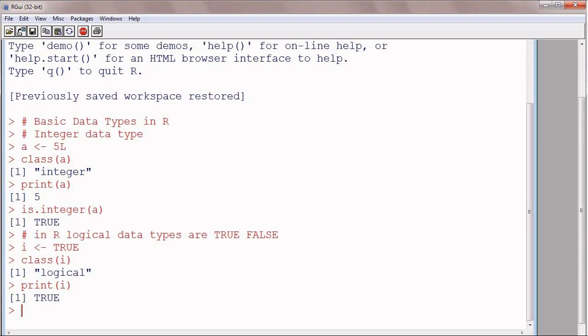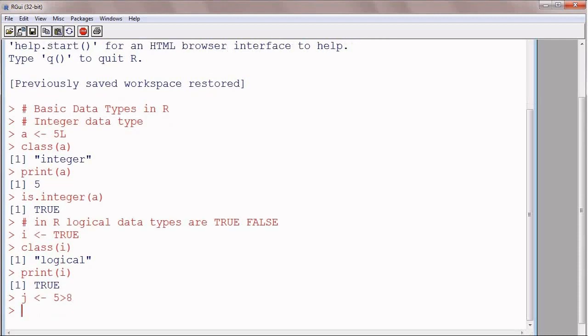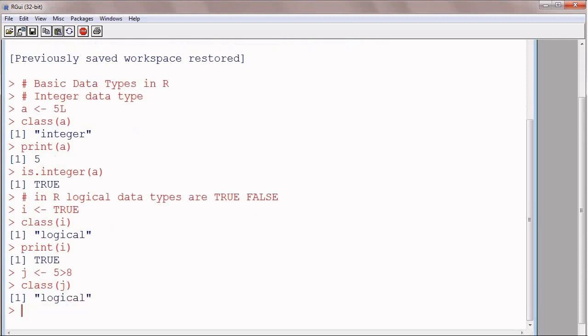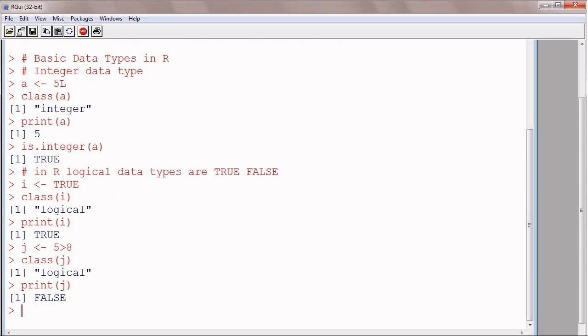If we print I, it will print the value stored in it, which is true of course. J is another logical variable, and it is assigned an expression 5 greater than 8, which is false. So J will store false in it. Class of J will be again logical, and if you try to print J, it will result in false of course, because the expression is false.